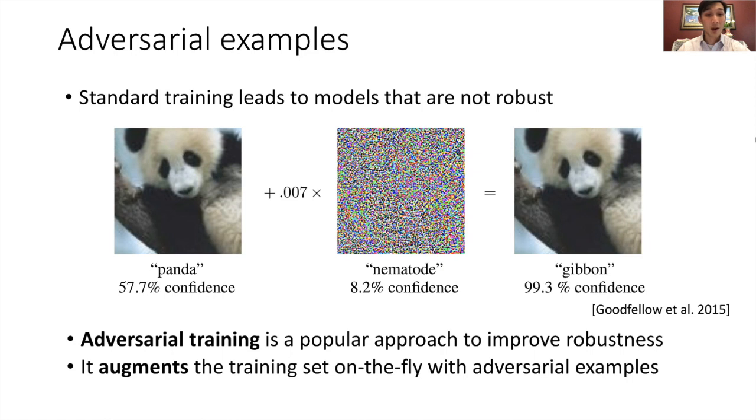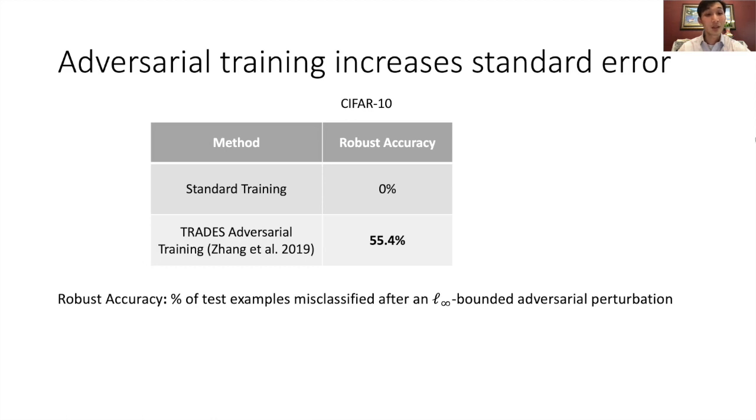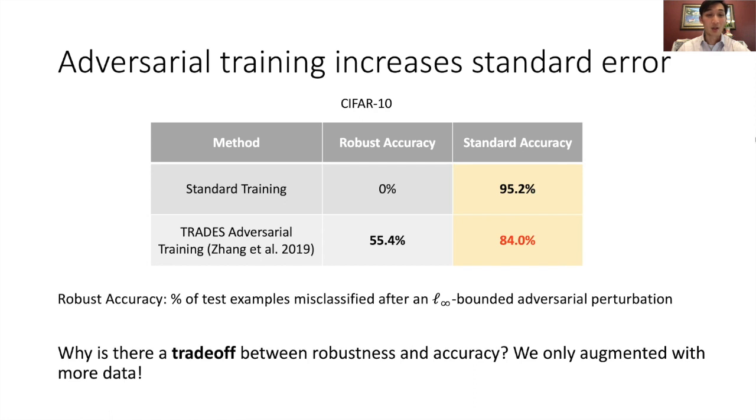Adversarial training is a popular approach for improving robustness by augmenting adversarial examples to the data set on the fly. The table here shows the robust accuracy of standard training versus an adversarial training method on CIFAR-10. The robust accuracy is the percentage of test examples misclassified after an L-infinity bounded adversarial perturbation. Adversarial training improves the robust accuracy significantly. However, standard accuracy, which is on the unperturbed examples, drops by about 10%.